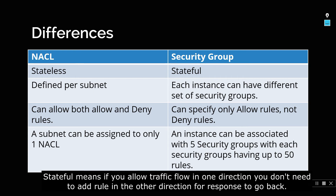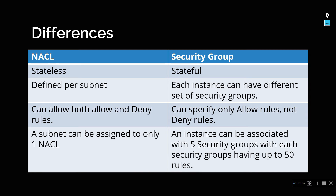NACL is defined per subnet, whereas each EC2 instance can have a different set of security groups. You can attach more than one security group to a specific instance — for example, one security group that allows SSH and another that allows HTTP calls — and then attach the corresponding security groups that your EC2 instance requires. In NACL you can specify both allow and deny rules because it is stateless, so you explicitly state whether inbound and outbound are allowed for a specific IP.